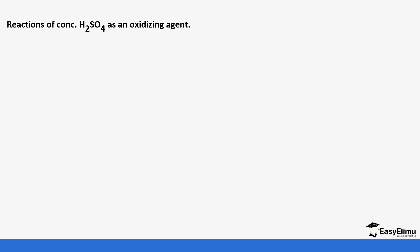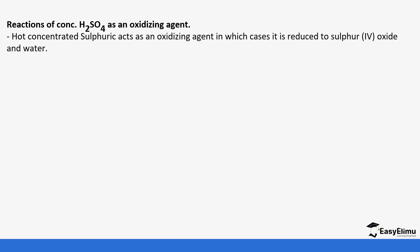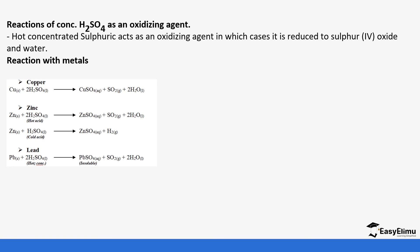Sulfuric acid also acts as an oxidizing agent, in which case it is reduced to sulfur dioxide (SO₂) and water. When concentrated sulfuric acid reacts with copper, it forms copper sulfate, sulfur dioxide (SO₂), and water. Normally when metals react with acid they form a salt and hydrogen gas, but because of its oxidizing nature, water and SO₂ are formed instead. Zinc also reacts with hot concentrated sulfuric acid to form zinc sulfate, sulfur dioxide (SO₂), and water; when cold it forms zinc sulfate and hydrogen gas. Lead reacts with concentrated sulfuric acid to form lead sulfate, sulfur dioxide (SO₂), and water — though this reaction starts and then stops.